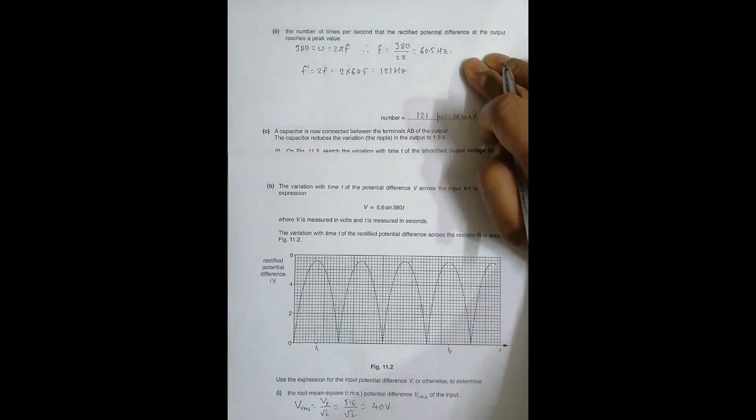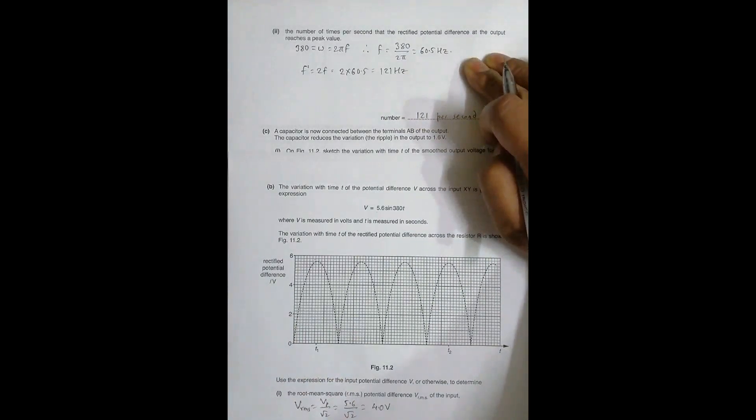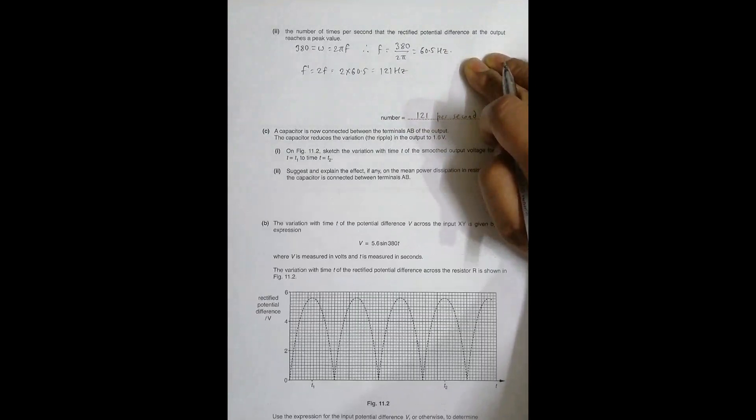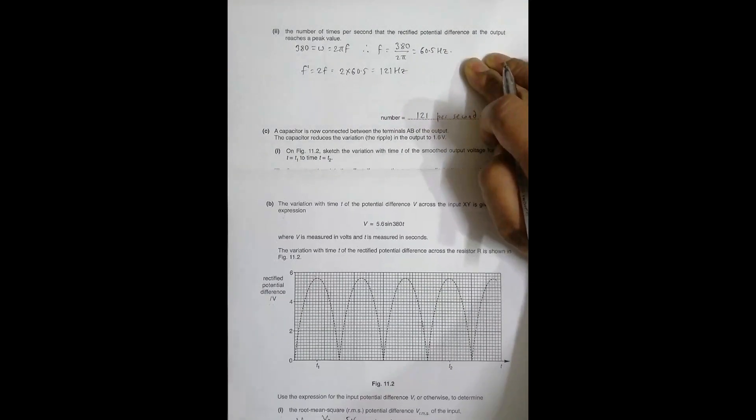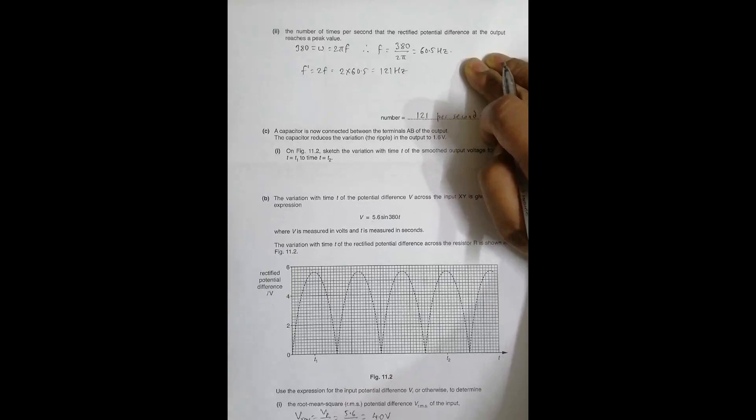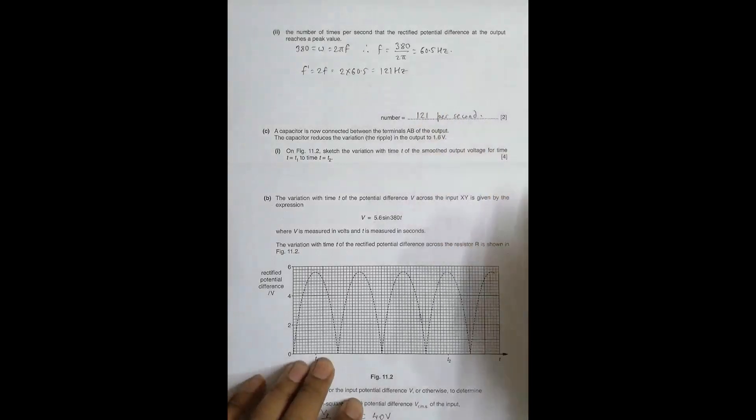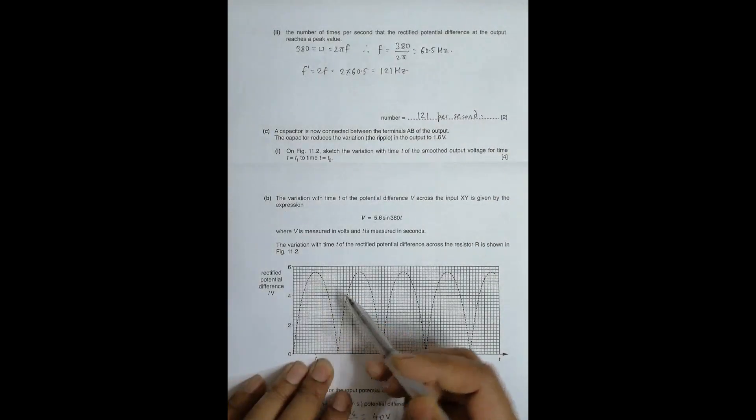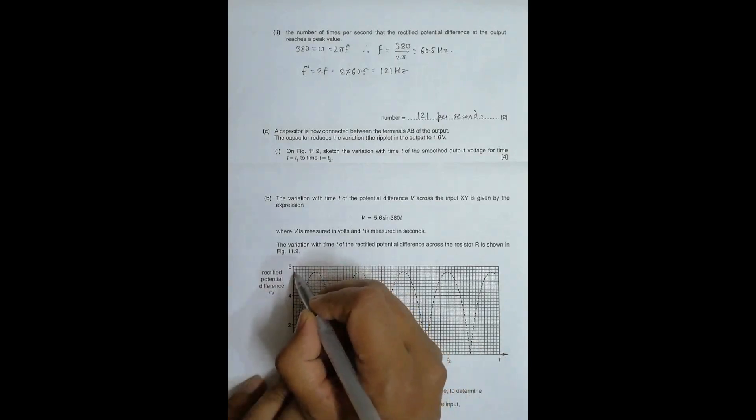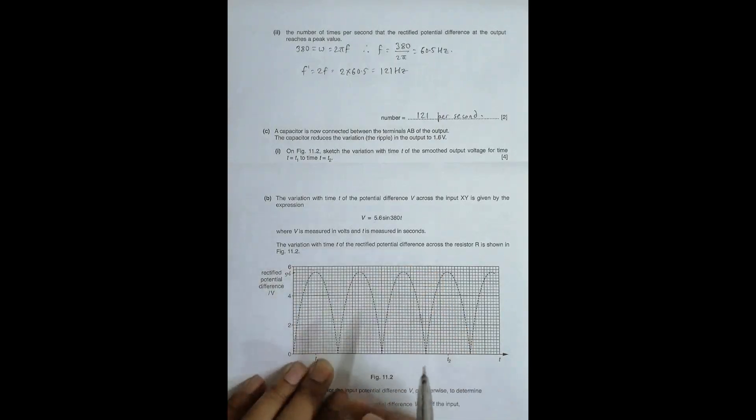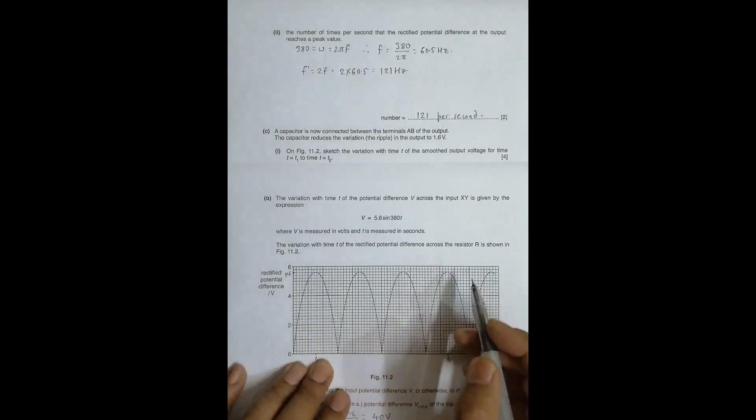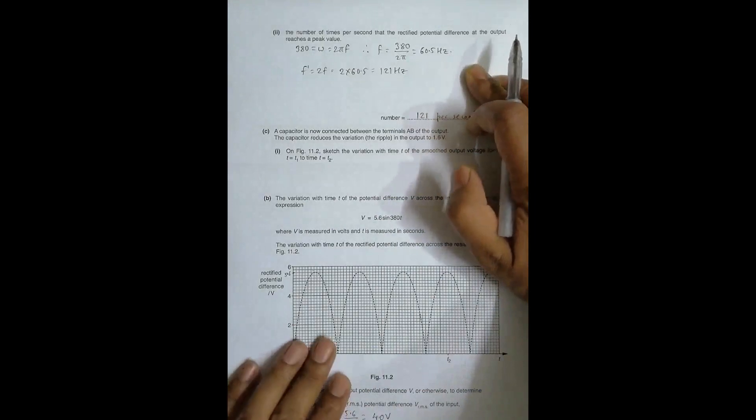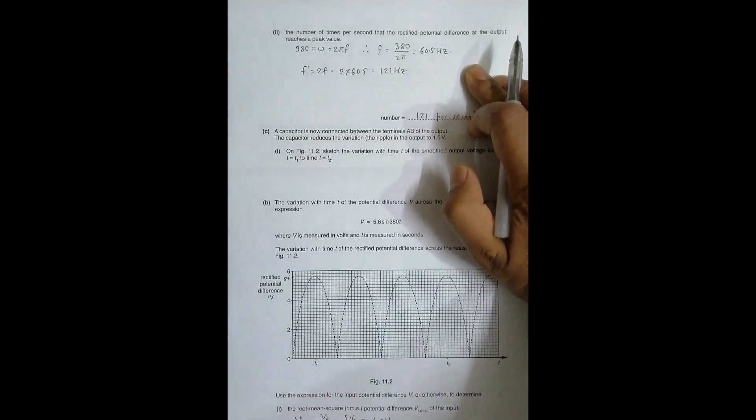The next question says a capacitor is now connected between the output terminals AB of the output. The capacitor reduces the variation, the ripple in the output to 1.6 volt. Ripple means the difference between maximum and minimum value. So that is 1.6. So if this is 5.6 here, the lowest value should be 1.6 less than this which is 4.0. So highest value 5.6 and lowest value 4.0.